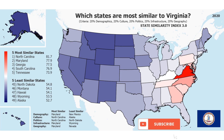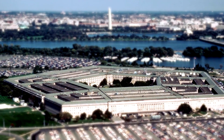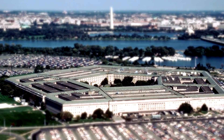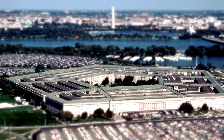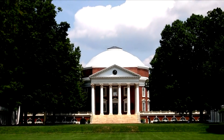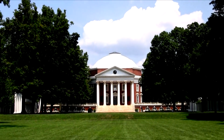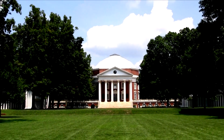Its two most similar states are North Carolina and Maryland, in part because much of its population lives in the Washington, D.C. metropolitan area. Its people tend to be wealthier and more educated than most southern states.